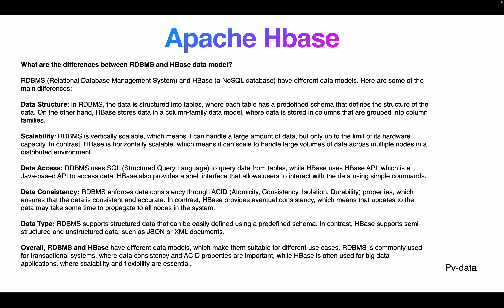The third difference is data access. RDBMS uses SQL (Structured Query Language) to query data from tables, while HBase uses the HBase API, which is a Java-based API to access data. HBase also provides a shell interface allowing users to interact with data using simple commands. On data consistency, RDBMS enforces data consistency through ACID properties — Atomicity, Consistency, Isolation, and Durability.